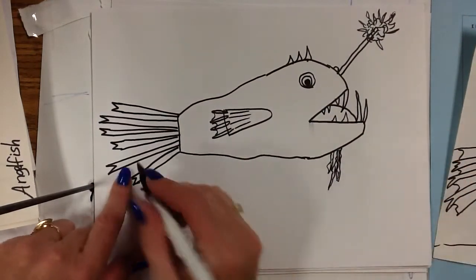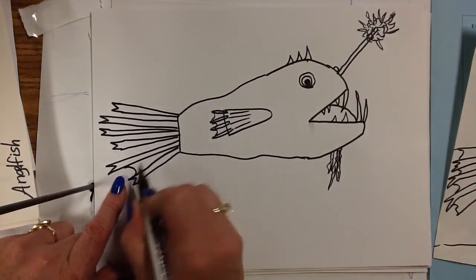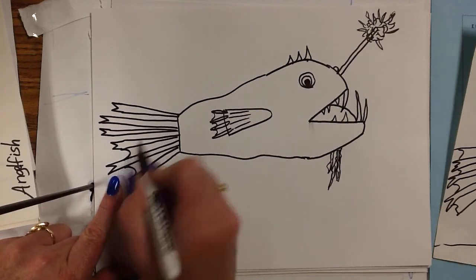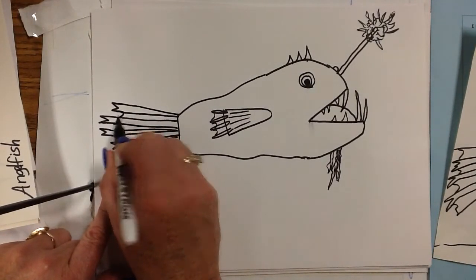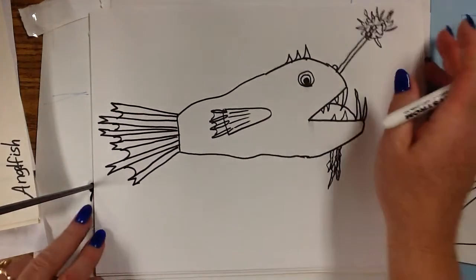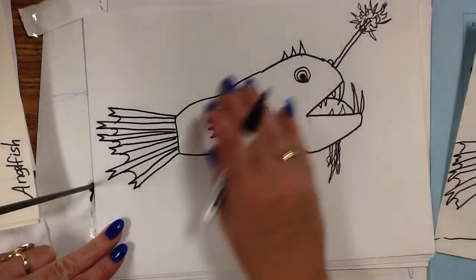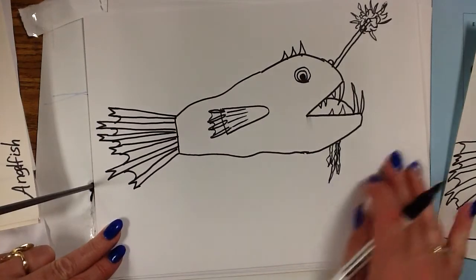And then I can put, to connect them all, just put curves. Curve in, up. Like the sideways seas. Backward seas. And that's basically your body for your angler.